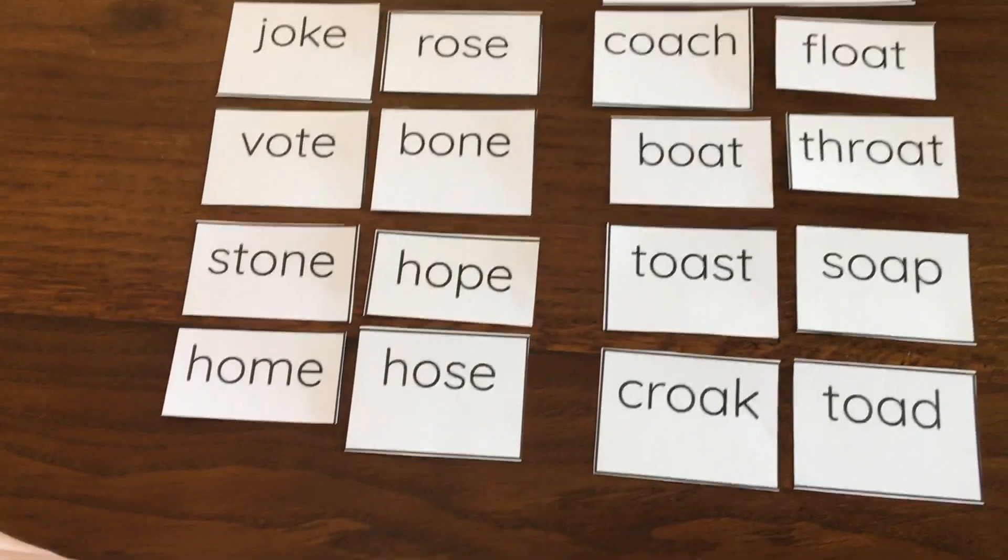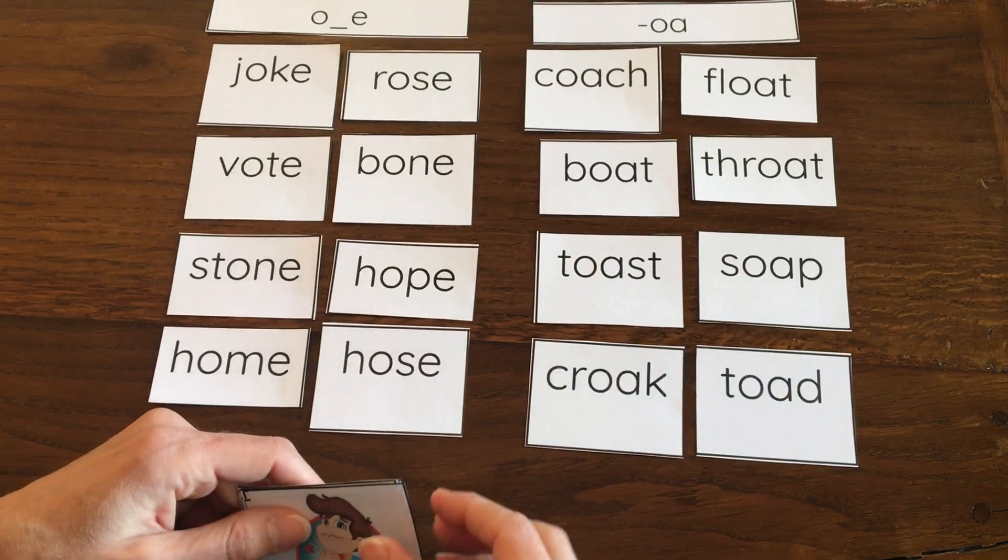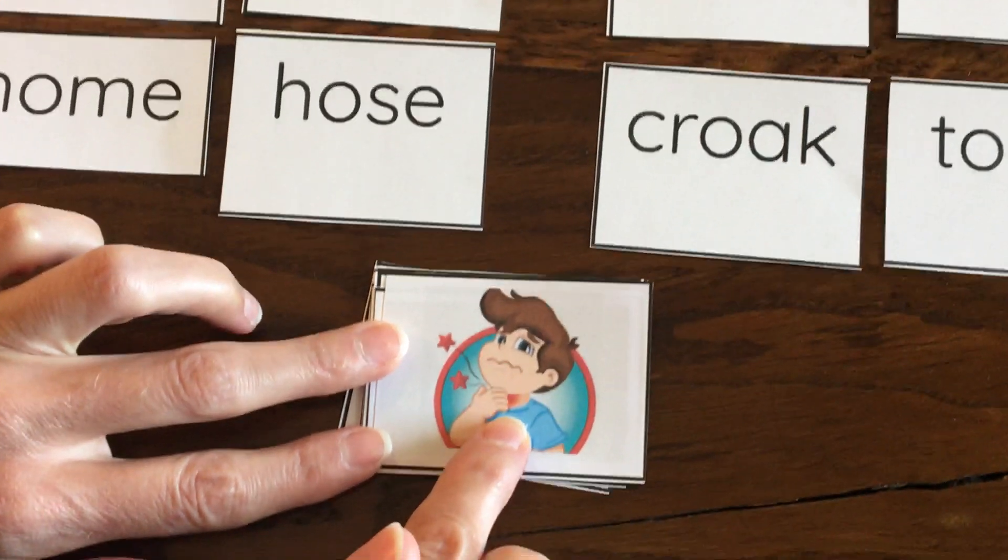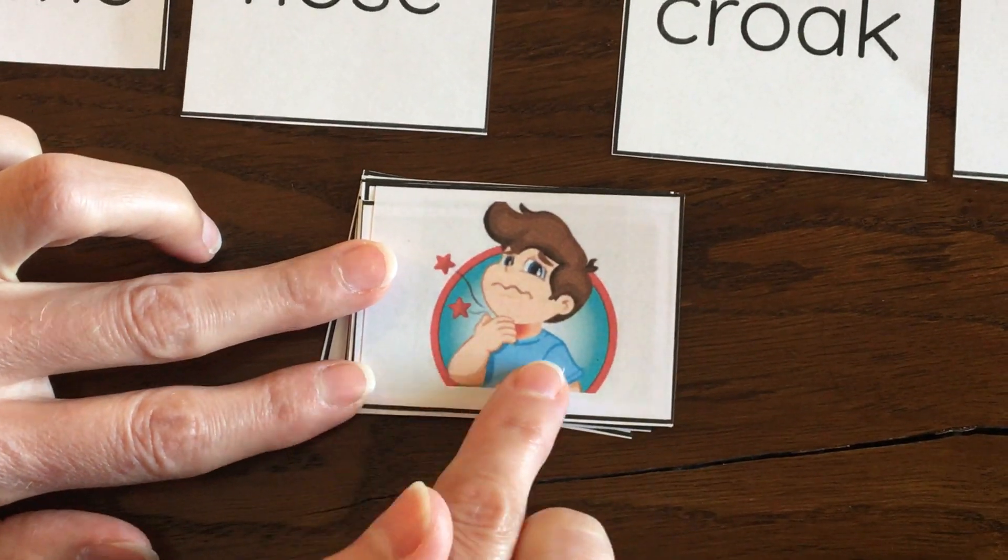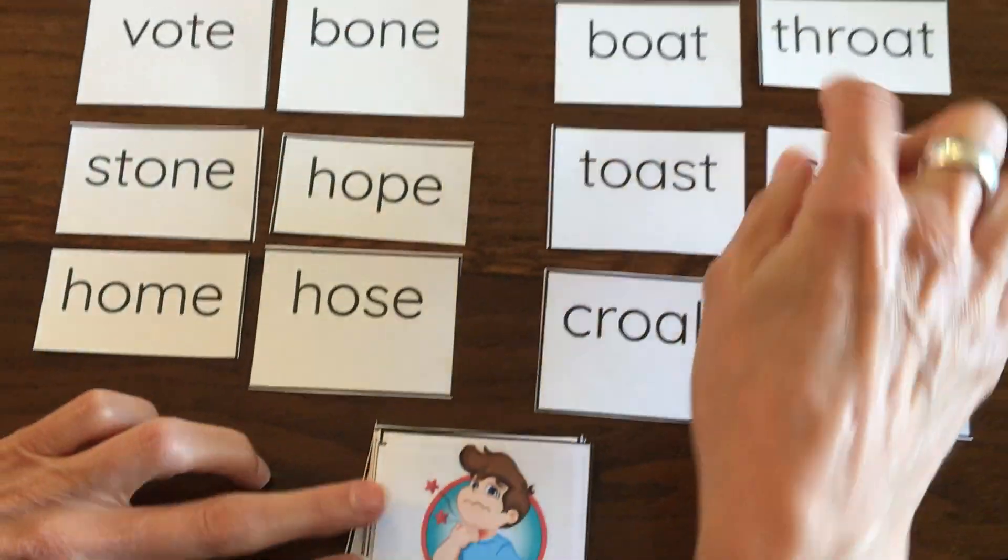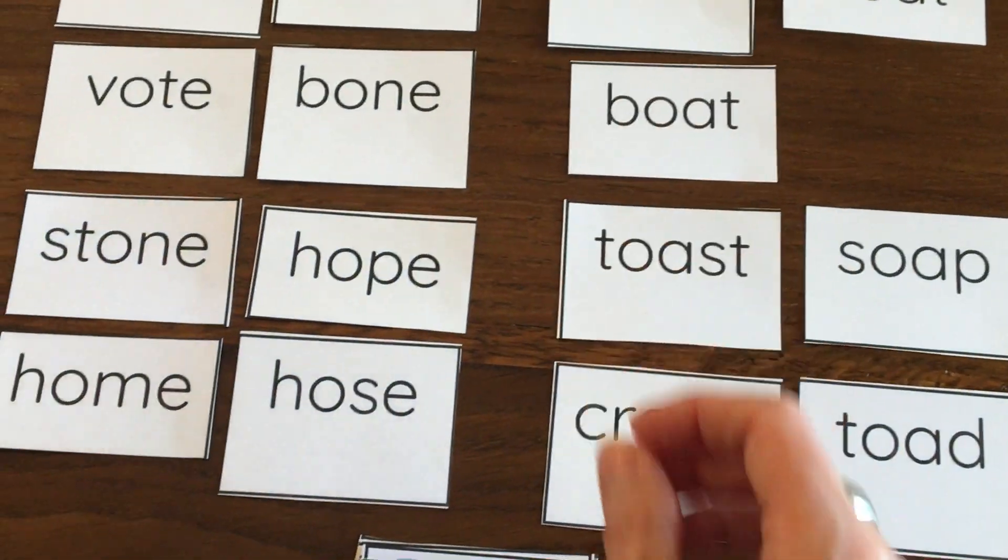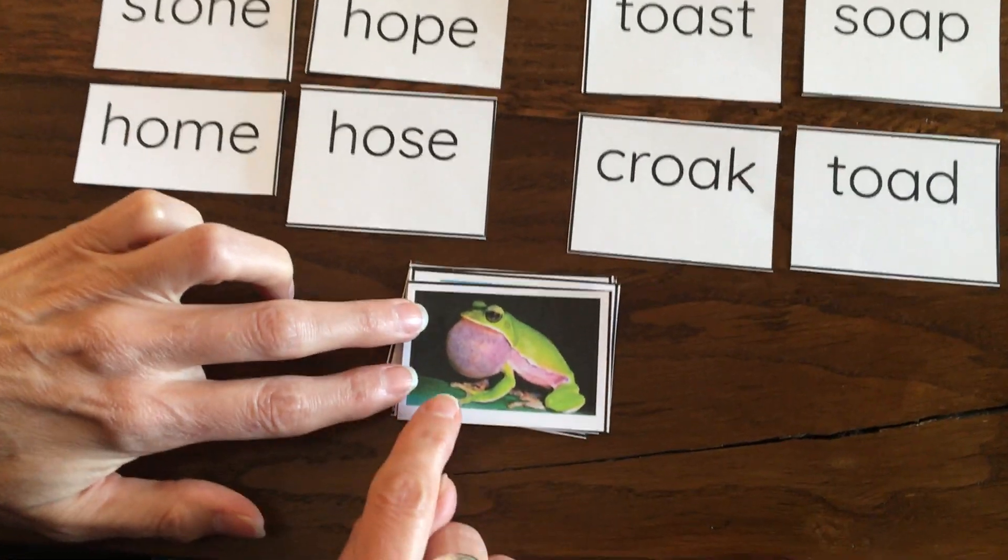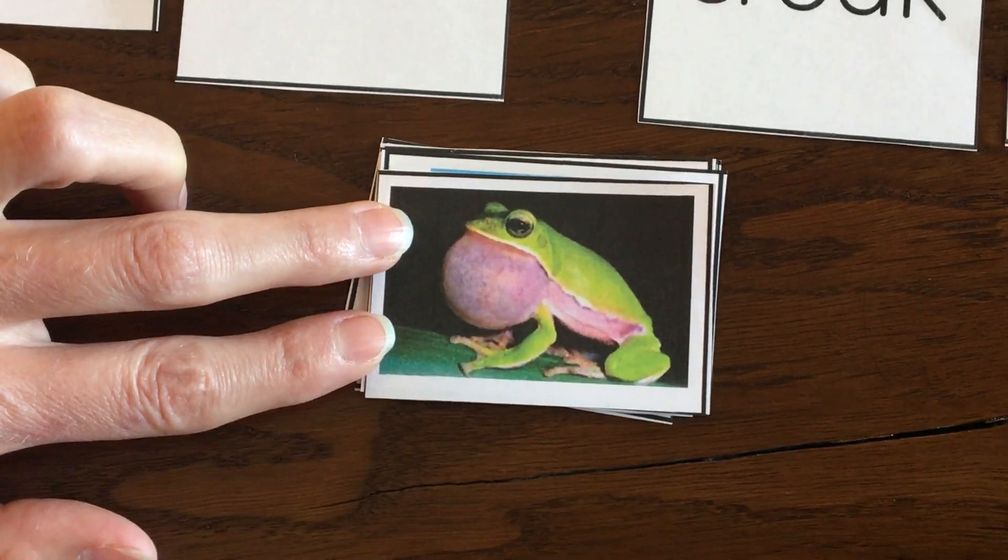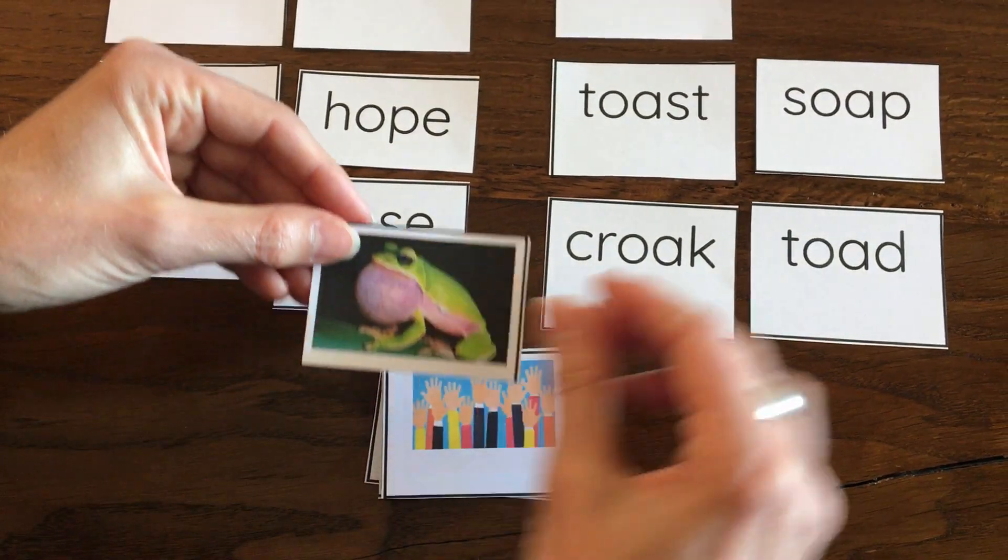Now, boys and girls, let's take a look at the pictures that I have here and let's find the word that matches. This is a little boy and he's got a sore throat. You can see that. It hurts him. There's the word throat. So those two are a match. Look at this frog. He's got a big bubble here because he's making his sound. He's saying croak. Goes with that word. Croak.